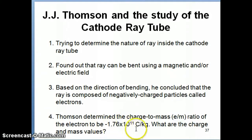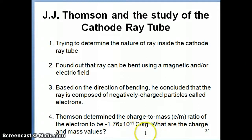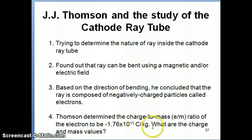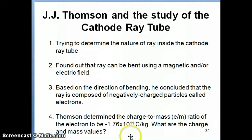The value is negative 1.76 times 10 to the 11th Coulombs per kilogram — Coulomb being the unit for charge. If you look at this number, it's a pretty big number, 10 to the 11th, which implies something about the electron: it must have a relatively small mass, because mass is in the denominator of this ratio, yet the charge is fairly large relative to that mass. So the question is: what exactly is the charge and what exactly is the mass of an electron? We need to know those two properties individually, not just their ratio.